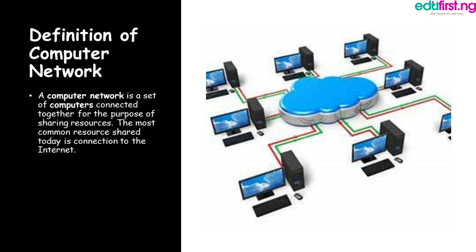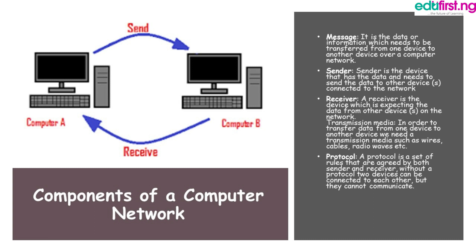Let's discuss the components of a computer network. We have message, sender, receiver, and protocol — every network must have these four elements to function. Message is the data or information that needs to be transferred; it could be an email, a chat, or anything.